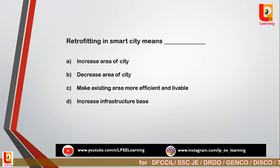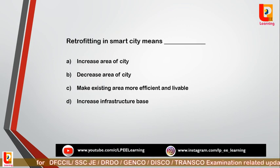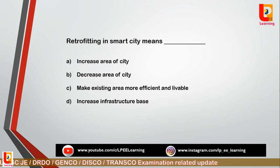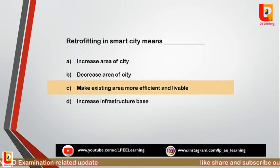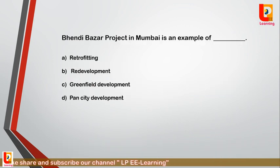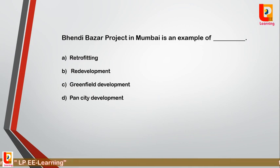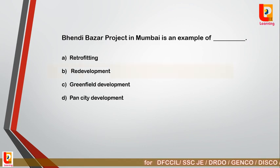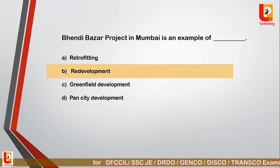Question 23: Retrofitting in smart city means — option A: increases the area of the city; option B: decreases the area of the city; option C: making existing area more efficient and livable; option D: increases the infrastructure base. Correct answer is option C: making the existing area more efficient and livable is called retrofitting. Question 24: Bhendi Bazaar project in Mumbai is an example of — option A: retrofitting; option B: redevelopment; option C: greenfield development; option D: pan city development. Correct answer is option B: redevelopment.